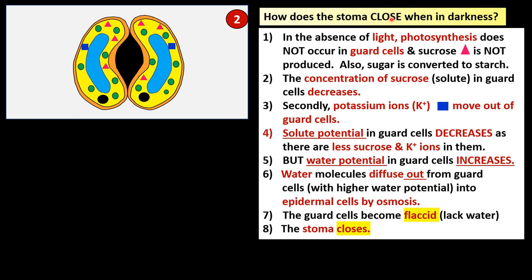How does the stoma close in darkness? In the absence of light, photosynthesis does not occur in the guard cells and sucrose is not produced. Furthermore, sugars like sucrose are converted to starch — the reverse of the situation in light. The concentration of sucrose in the guard cells decreases because sucrose is not being produced, and then potassium ions move out of the guard cells — again the reverse of the situation in light.